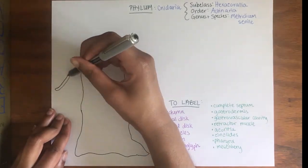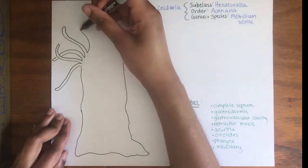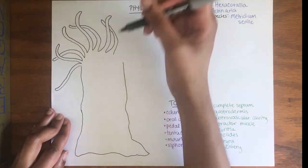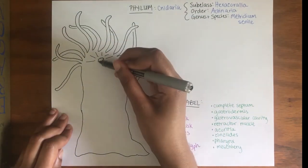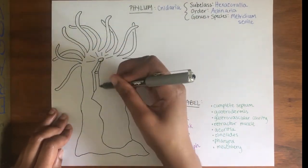So now let's draw our anemone. I'm going to be drawing a cutaway view so that we can identify the internal anatomy, as well as a bird's eye view from the top.